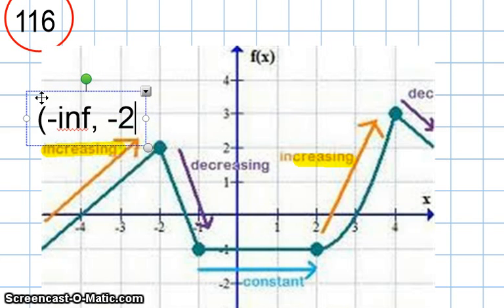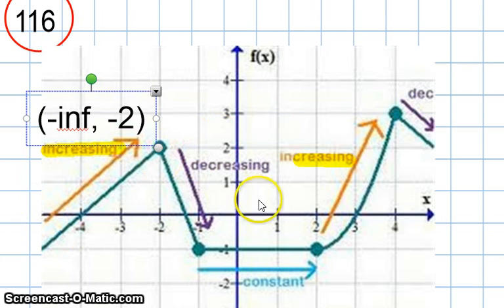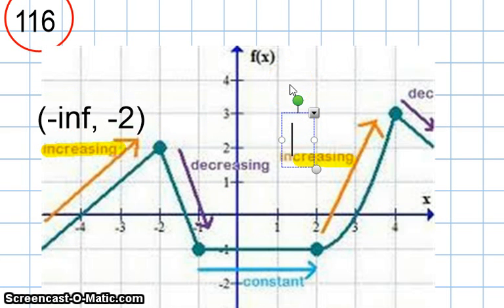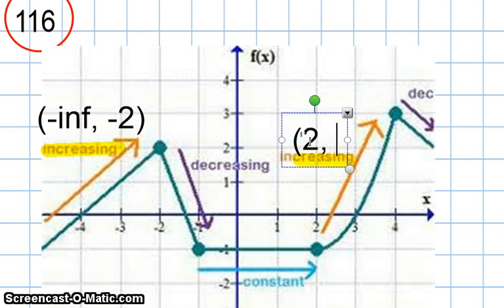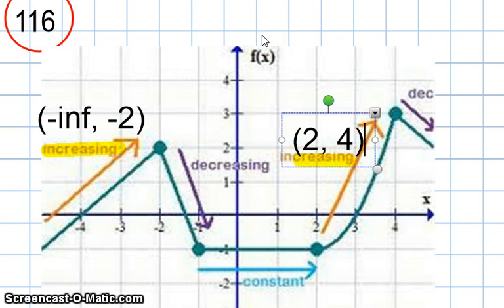I'm going to use a closed bracket to indicate that it includes negative 2. Sometimes you'll see a closed bracket or an open bracket — I'm not going to be particular about that. Where else is it increasing? It's also increasing over here, starting at 2. So I do open parenthesis or closed bracket at 2, and then it goes all the way up to 4. For this class, we're just going to use parentheses. So my function is increasing from negative infinity to negative 2, and it's also increasing on the interval from 2 to 4.